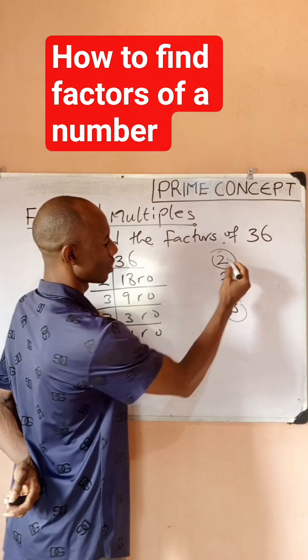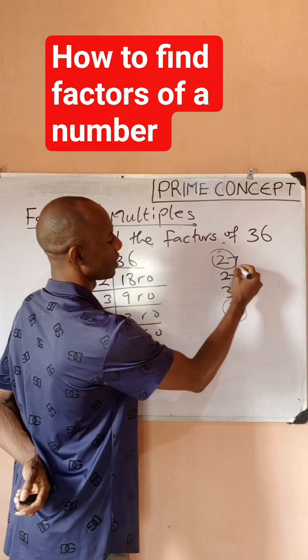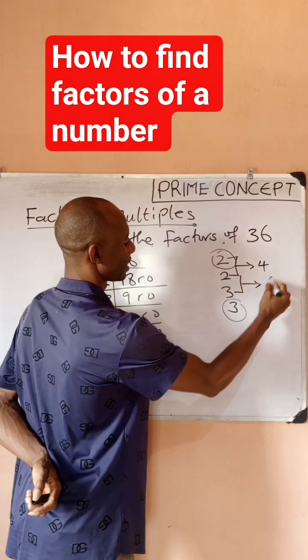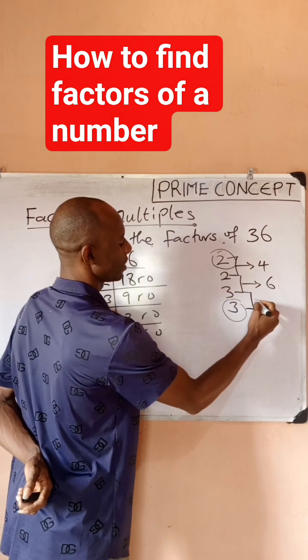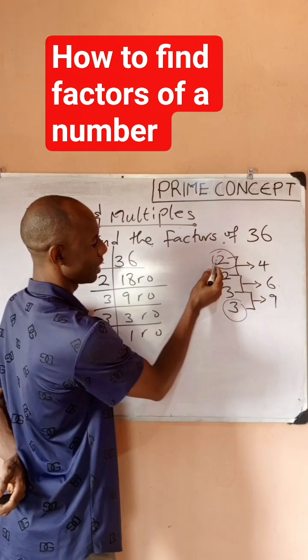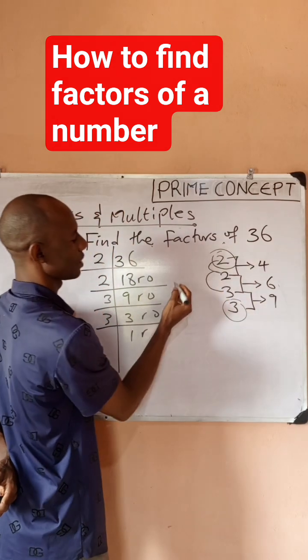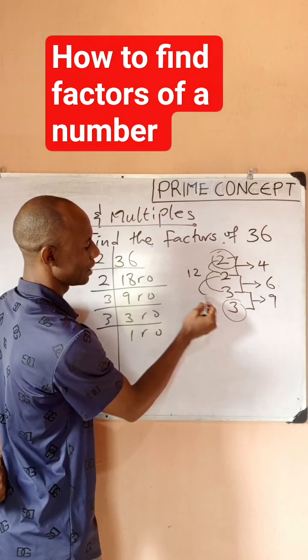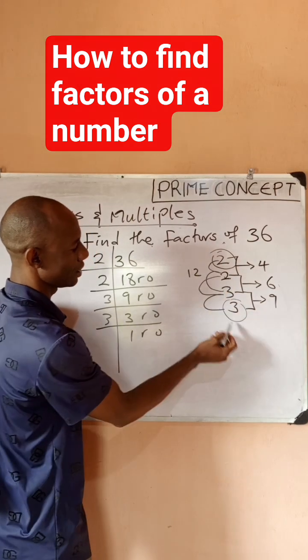Then next we're going to have this times this, which is 4. You have this times this, which is 6. You have this times this, which is 9. Then you multiply these first three, this is going to give us 12. You multiply this and this, 9 times 2, which is 18.